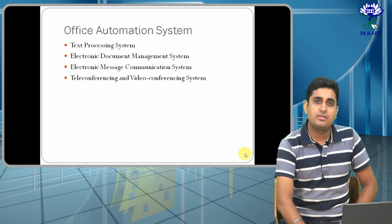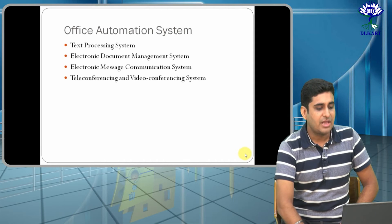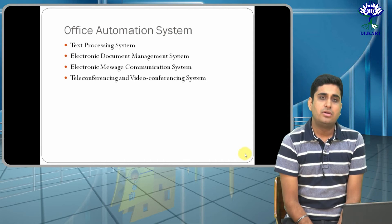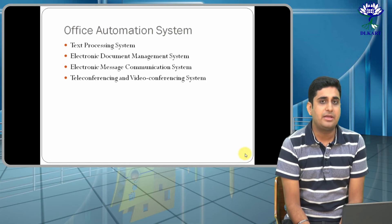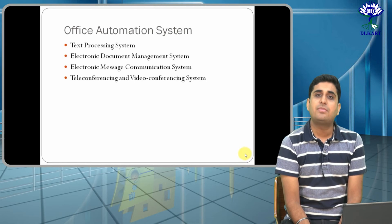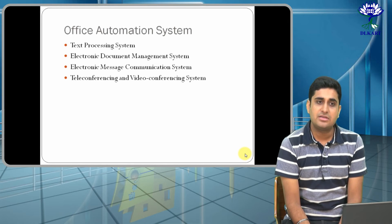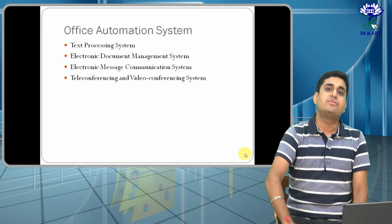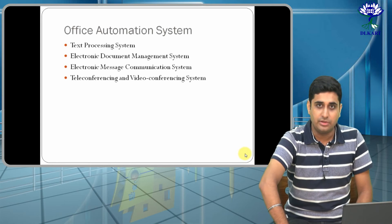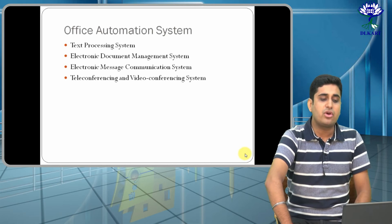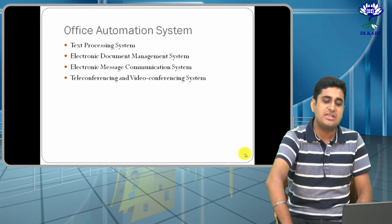The third category is Office Automation System. In any company or office, whatever tasks were happening manually — that is what Office Automation Systems help us automate. It includes text processing, electronic document management, electronic message communication, teleconferencing, and video conferencing — all these are part of office automation.